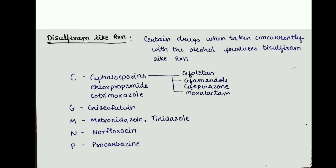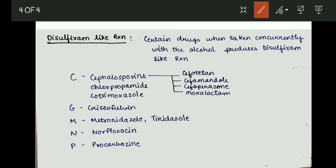Now we will discuss the drugs which cause disulfiram-like reaction. Certain drugs, when taken concurrently with alcohol, produce a disulfiram-like reaction. We can remember these by a simple mnemonic: CGMNP. The drugs starting with C are cephalosporins — like cefotetan, cefamandole, cefoperazone, and moxalactam.